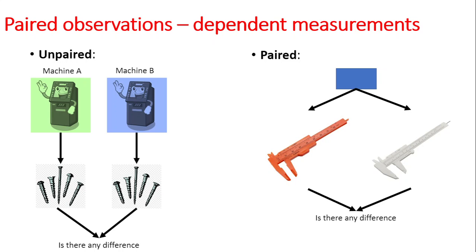In this video I'll be talking about how to conduct a t-test for paired observations, or paired t-test, using JMP. To give a difference between the paired and unpaired t-test: unpaired means the events are not related. For example, if you have two different machines generating the same parts, the operation of one machine does not depend on the other, so the parts generated by each machine are independent.